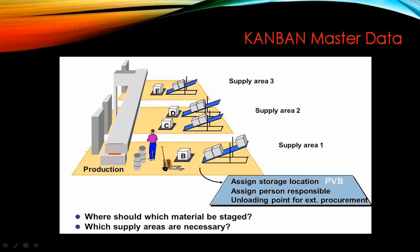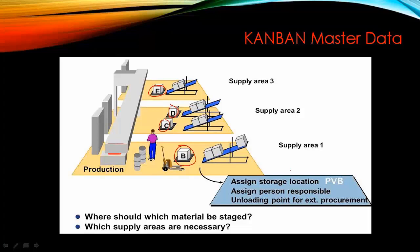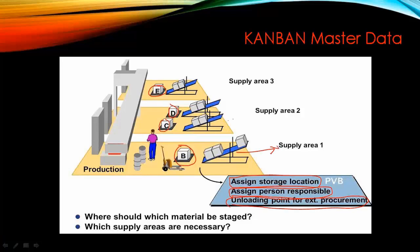Now let's look at how it works practically in SAP — Kanban master data. First, we will learn how to set up the Kanban master data, and then we will start the process. Basically, you have your material. When we create the master data, we assign a storage location to the material, and we also assign the person responsible — similar to how we assign the MRP controller in the material master. You can also assign the unloading point for external procurement. Every material has a supply area — supply can be from an external vendor, in-house production, or transferred from another warehouse.